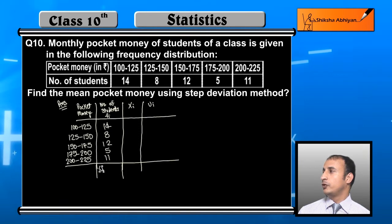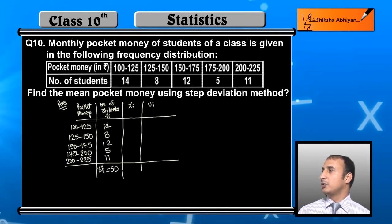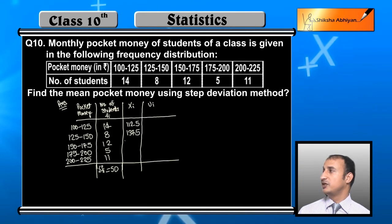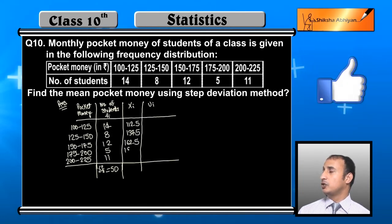XI is calculated as 100 plus 125 by 2 which becomes 112.5, 125 plus 150 by 2 is 137.5, 150 plus 175 by 2 is 162.5. We calculate upper plus lower by 2 for each class.